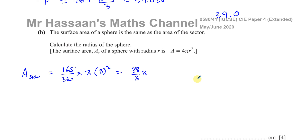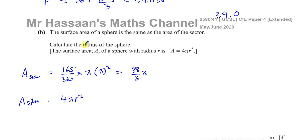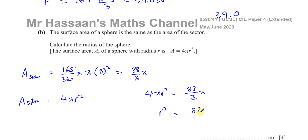The surface area of the sphere is 4πr², and this r is the radius of the sphere, not the sector. Setting the surface area of the sphere equal to the area of the sector: 4πr² = 88π over 3. Dividing both sides by 4π, we get r² = 88 over 12.